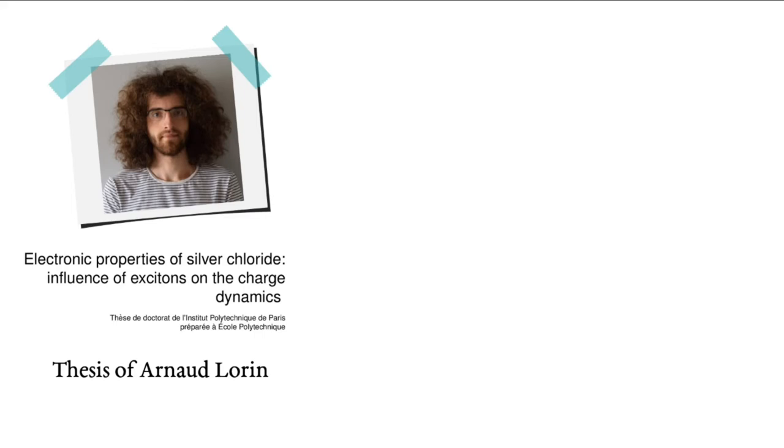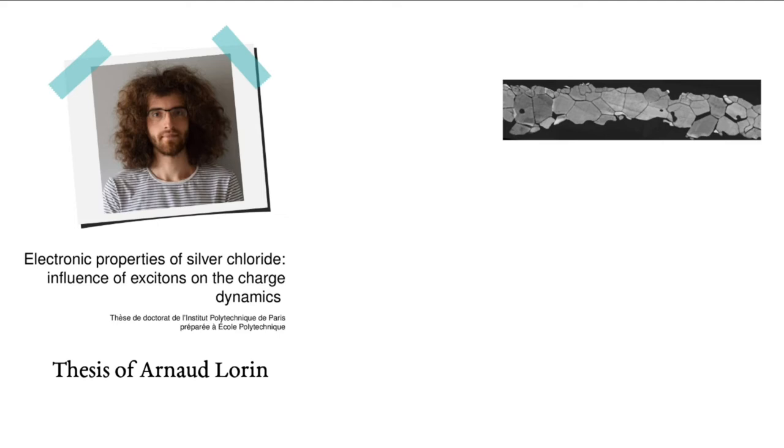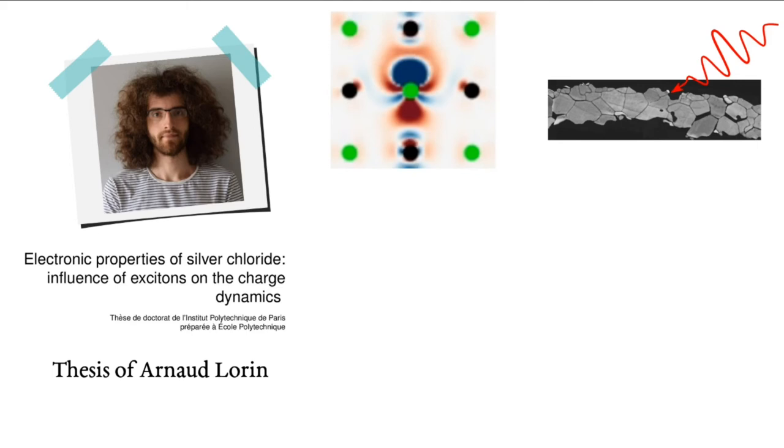Arnaud, in his thesis, studied electronic properties of silver chloride, and in particular, what happens in silver chloride when you shine light on it. We wanted to know how the electrons would react. So, first of all, we had to translate the dynamics of the electron distribution into mathematical formula. Arnaud really looked deeply into this.